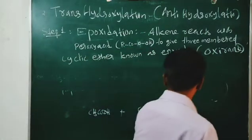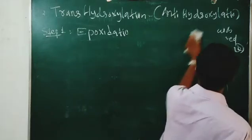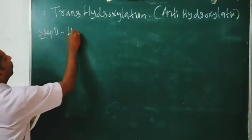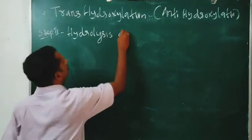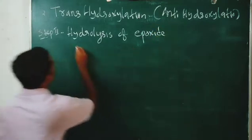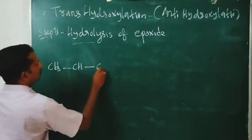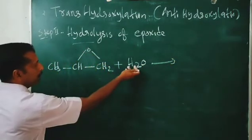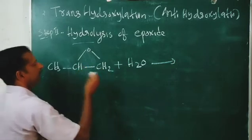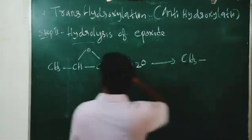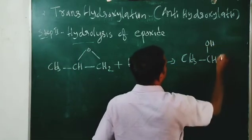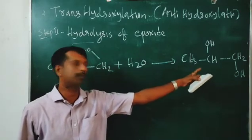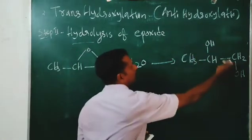The epoxide CH3CH-CH2 (with O bridging the two carbons) undergoes hydrolysis: plus H2O. The water attacks from the backside, and we get trans-1,2-diol. CH3 changes to CH(OH), and CH2 becomes CH2OH — giving trans-1,2-diol. The OH groups are on the opposite side of the C-C bond. This is trans-1,2-diol.